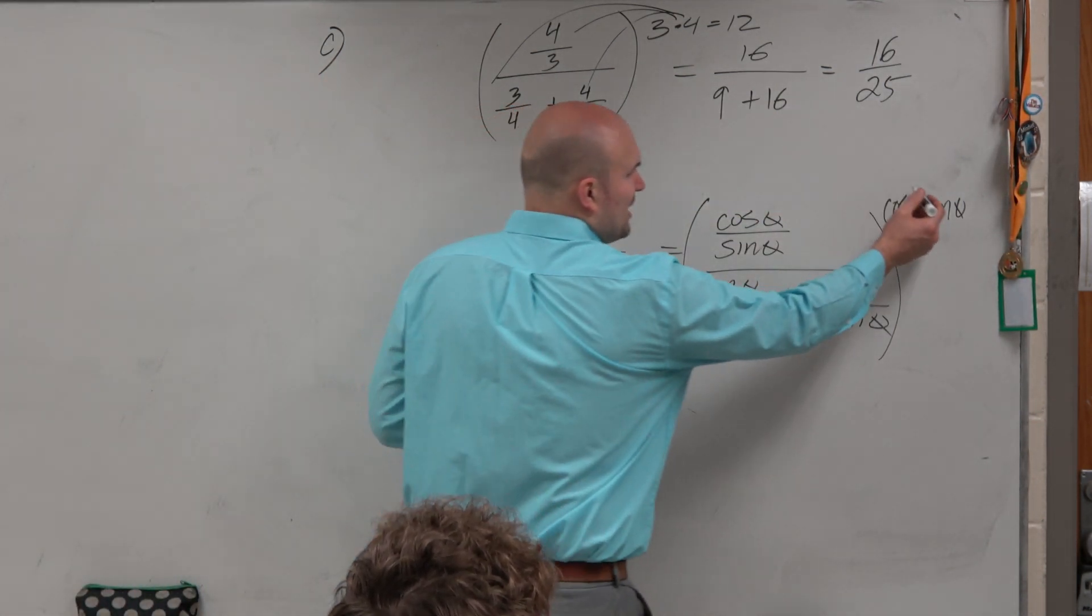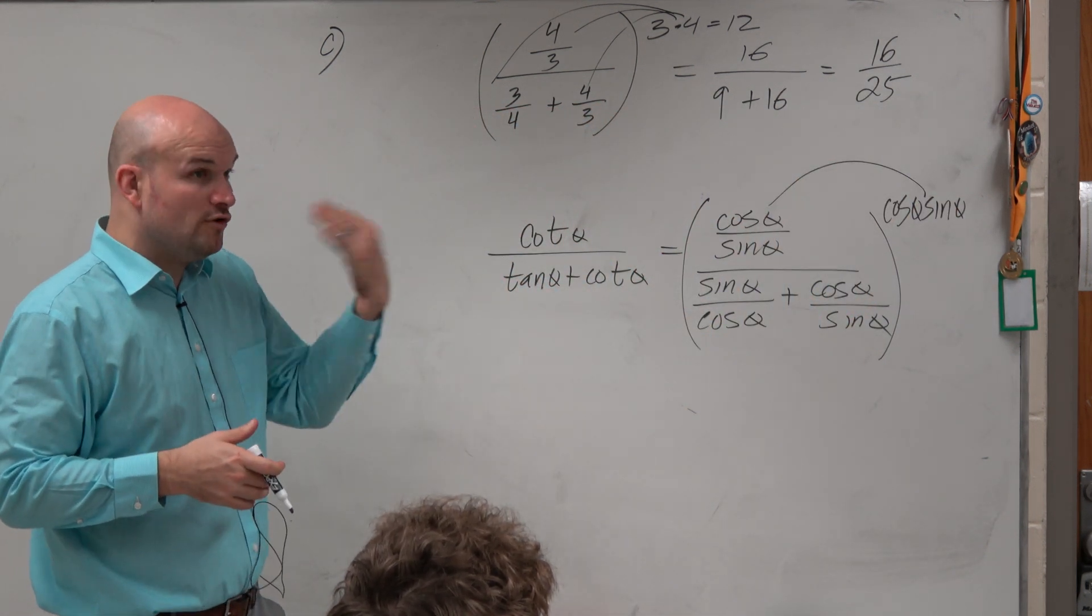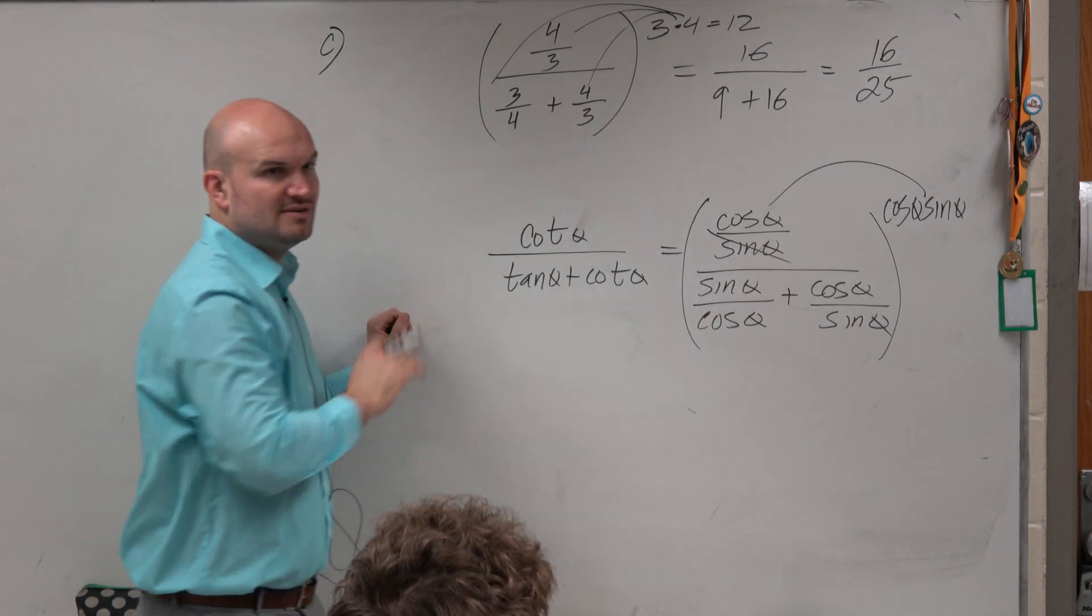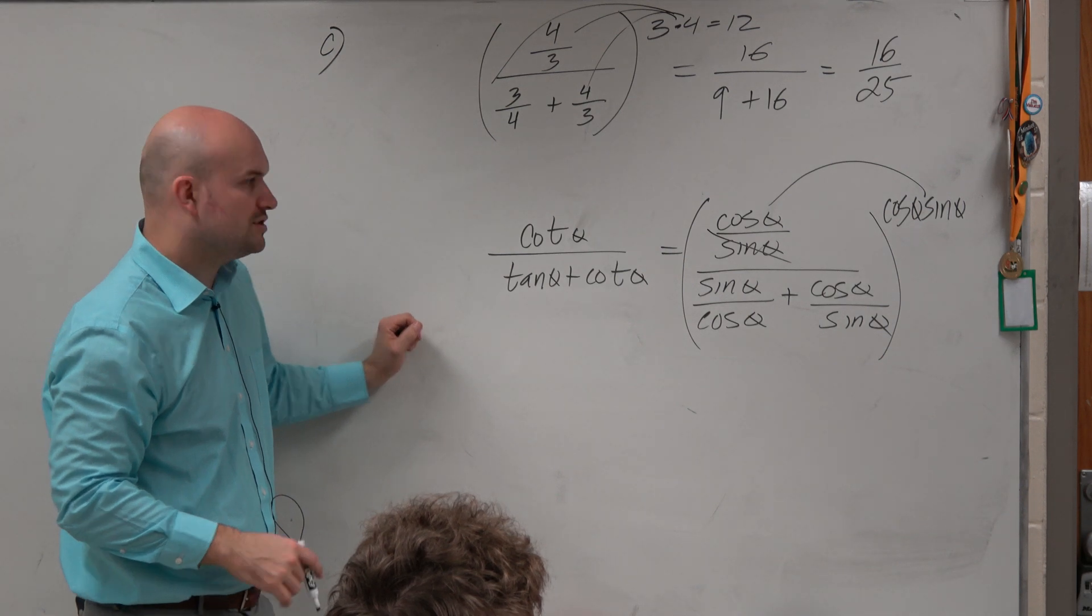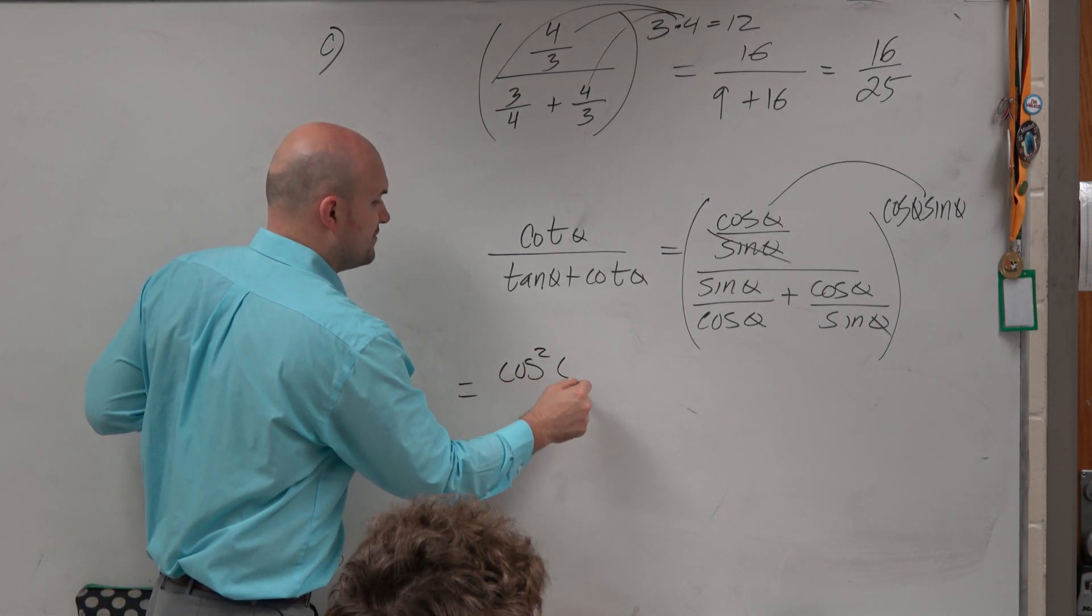Actually, because when I multiply cosine of theta times sine of theta times cosine of theta over sine of theta, I see that my sines would divide out, and I'd just be left with cosine times cosine, which is cosine squared of theta.